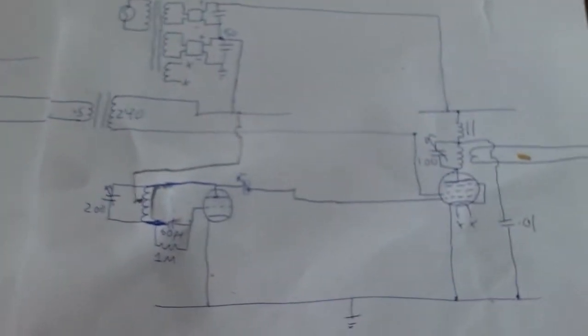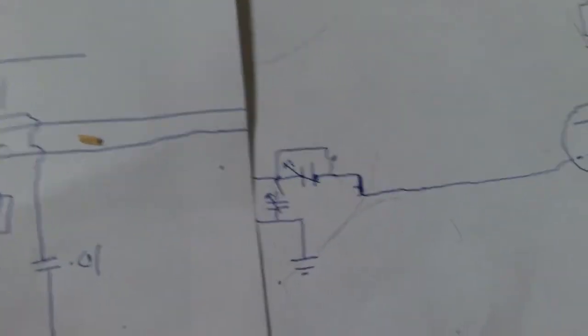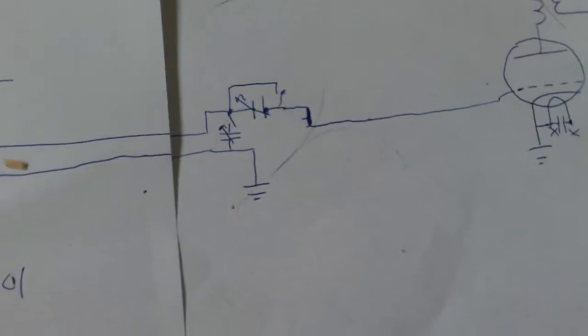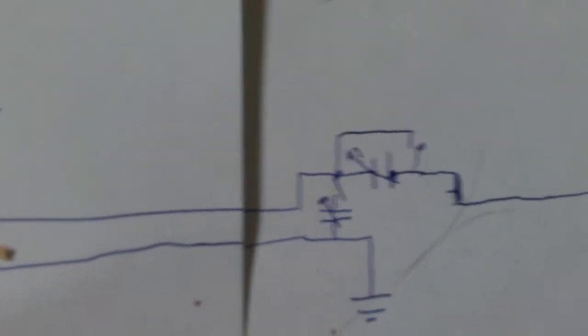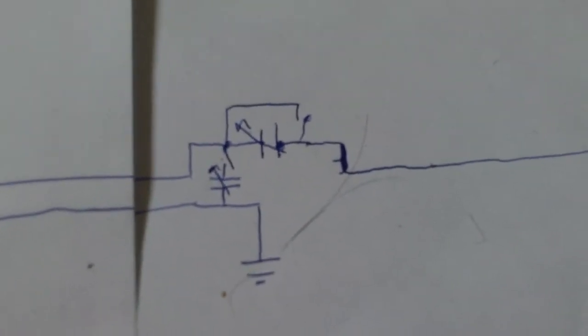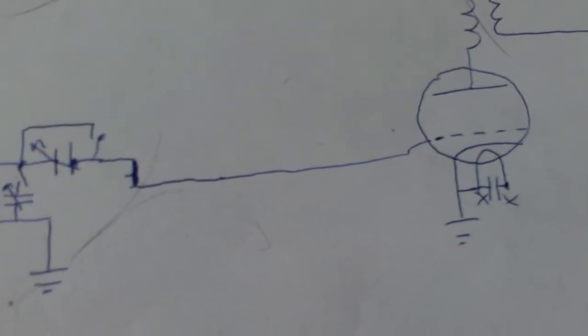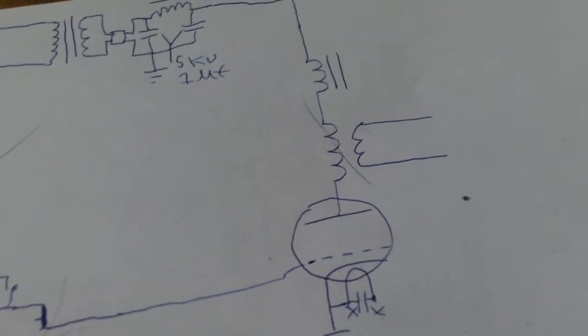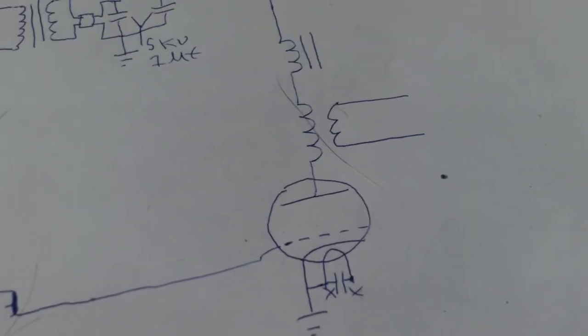And then if we go all the way over here to the output part, we see just some capacitors on the input. And then the output tube. And that basically just drives the coil.